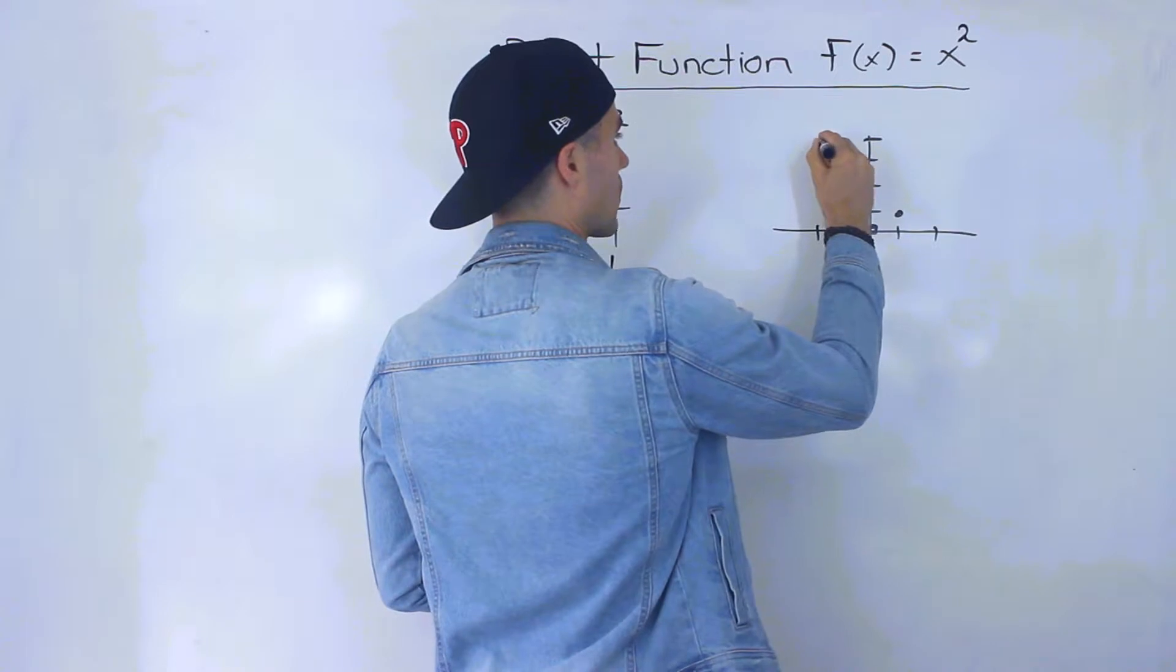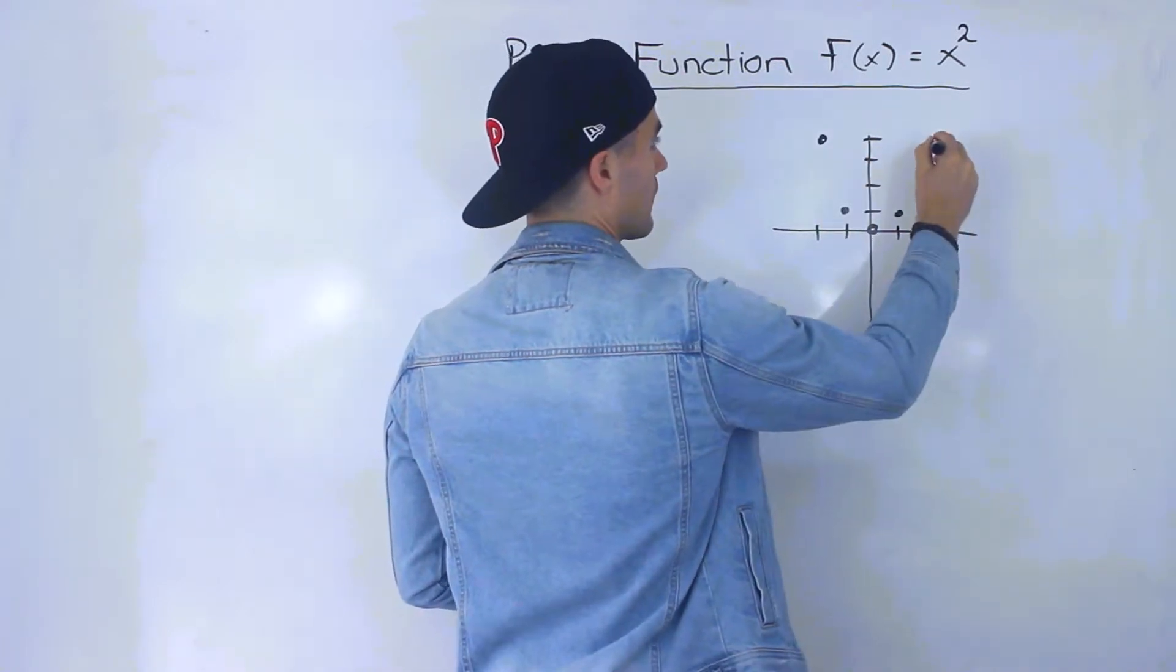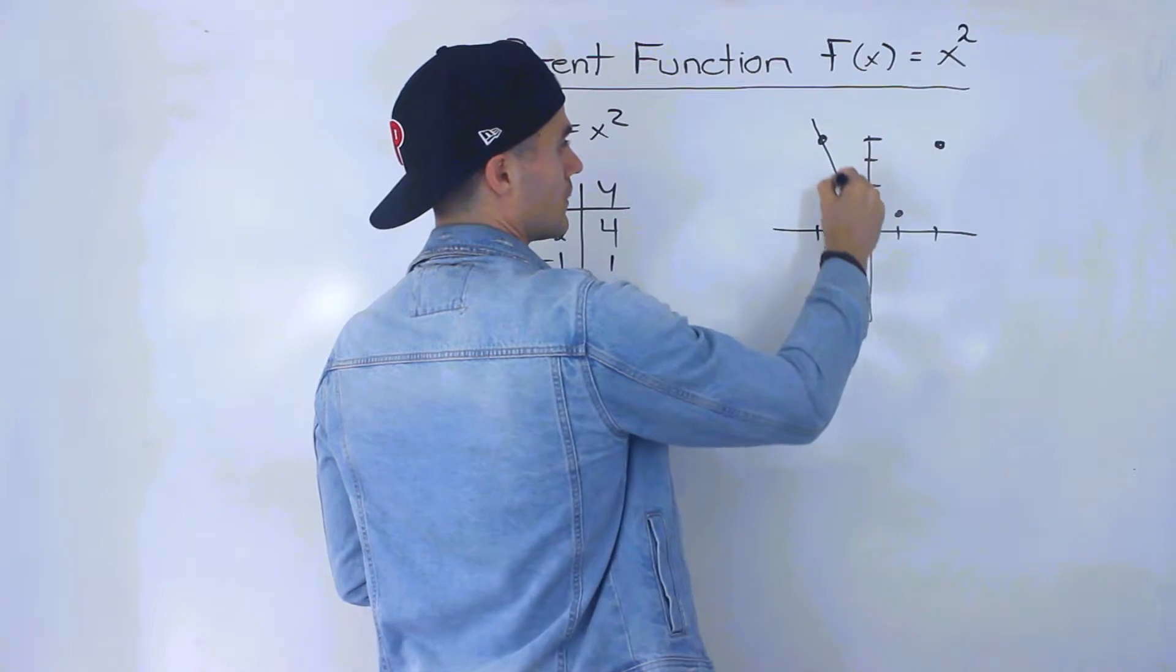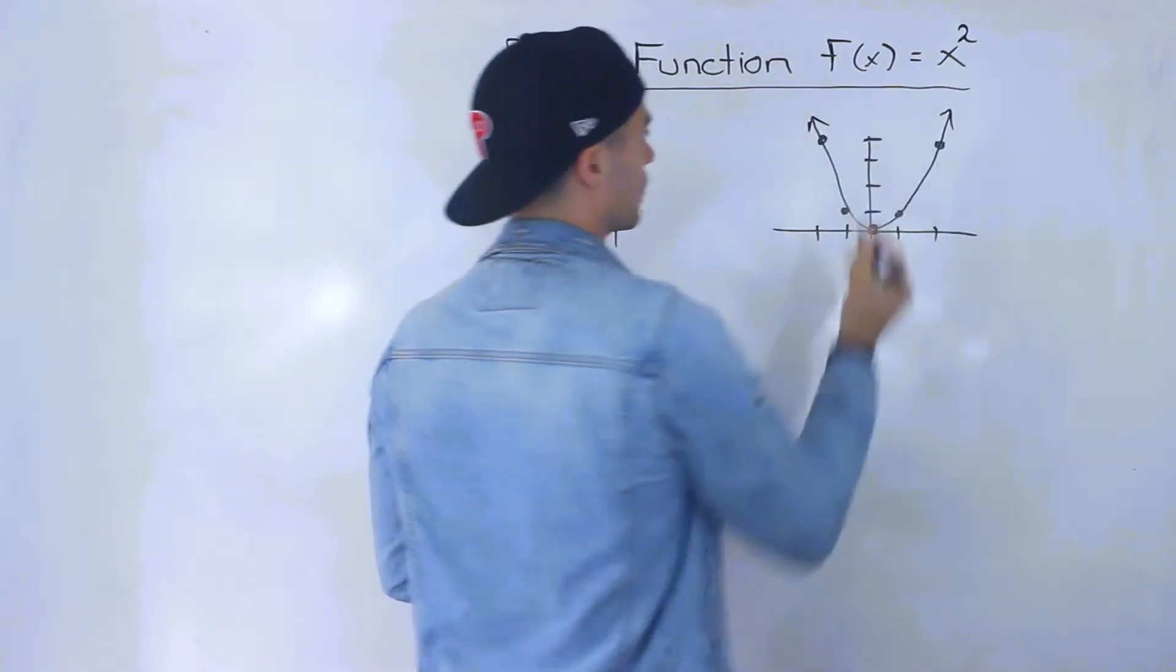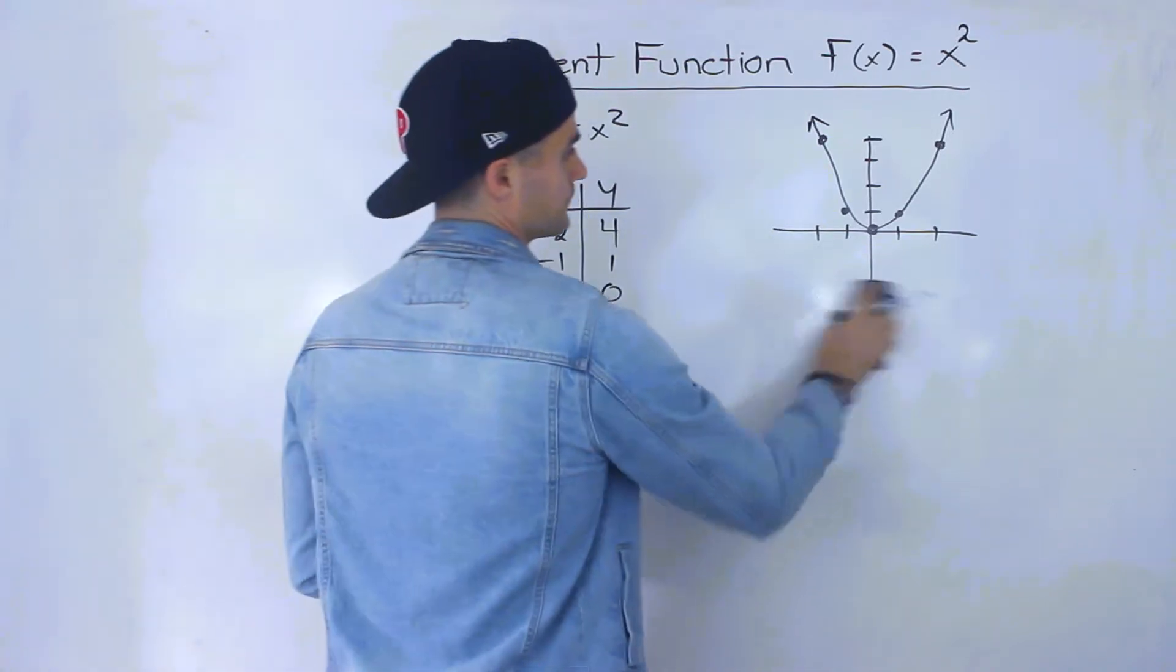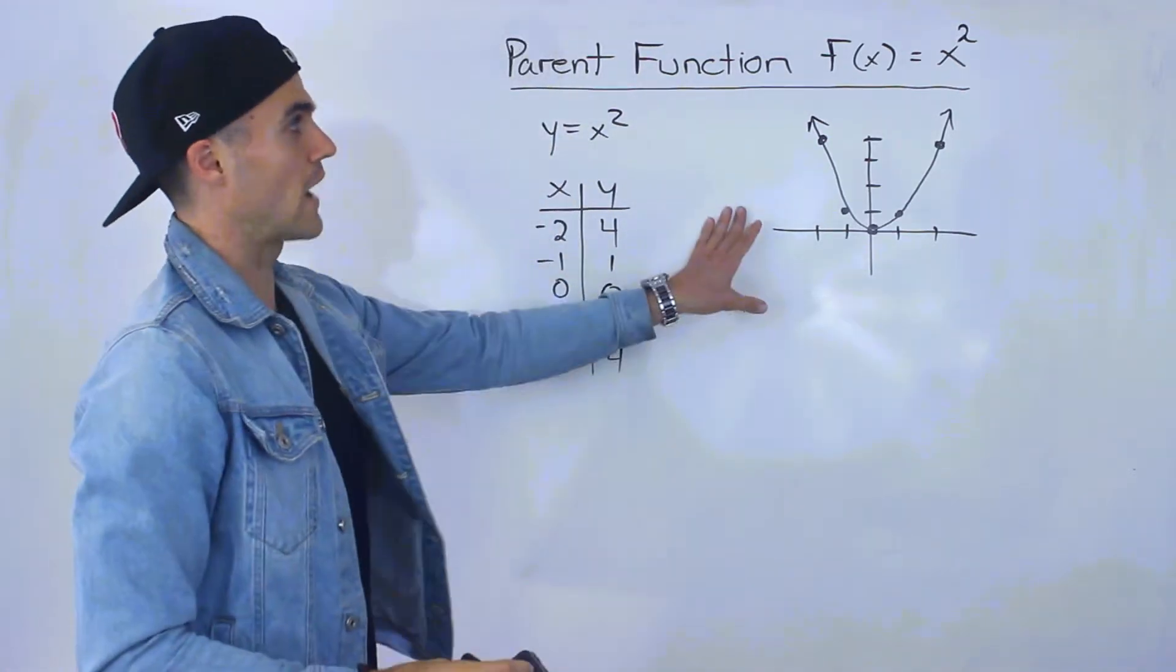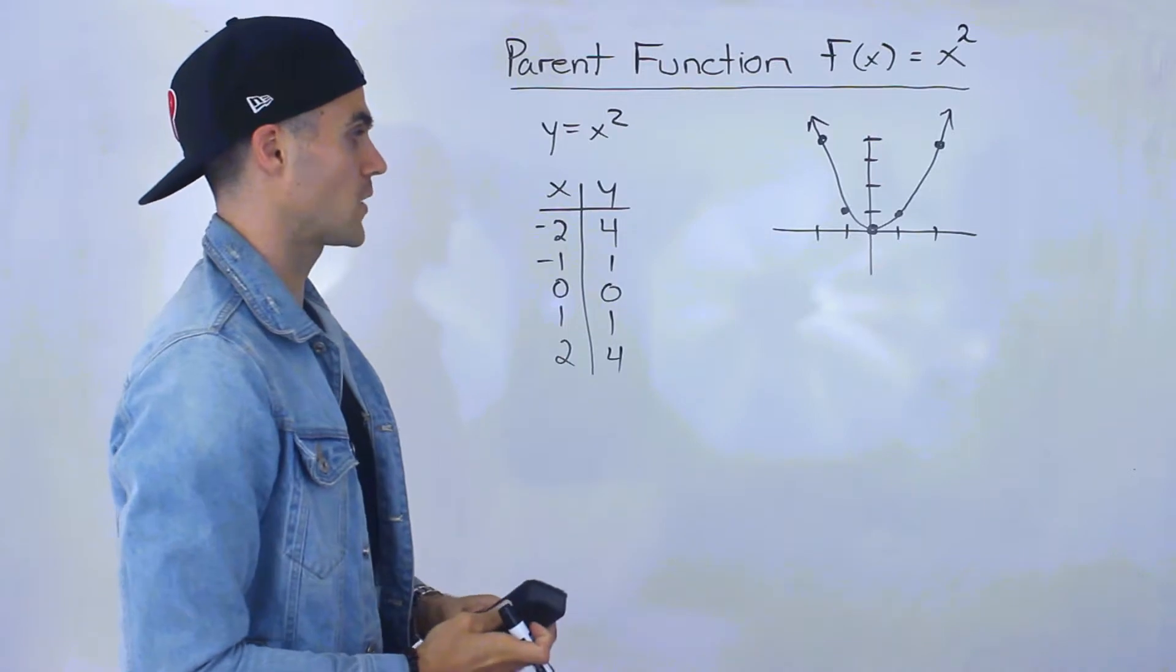Then we got (-2, 4) and (2, 4). So this is just a regular parabola like that. That's how the graph looks for this parent function x².